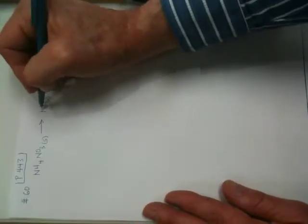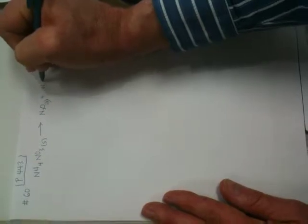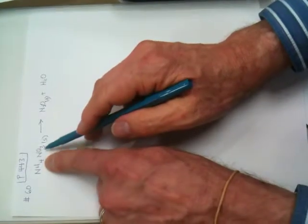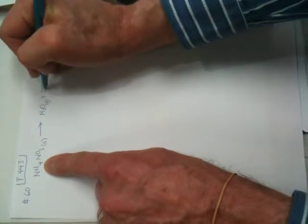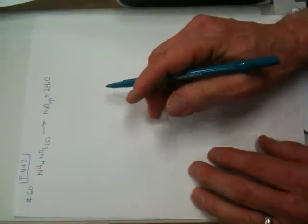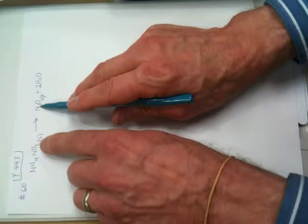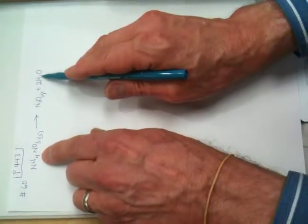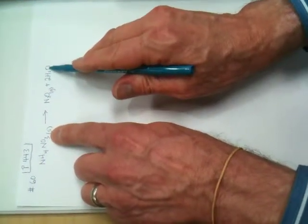Then we're also going to get water, and to balance these four hydrogens, I've got to use a coefficient of two here on the water, and then everything balances. We have two nitrogens to two nitrogens, four hydrogens to four hydrogens, and we have three oxygens, one here and two here.